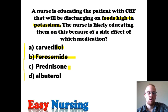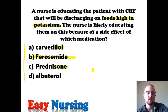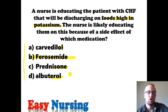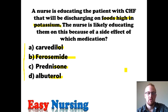Looking at the other options: prednisone is a steroid that helps the patient open up their lungs by decreasing inflammation. Albuterol, ending in '-terol,' is a beta agonist that acts as a bronchodilator to open up the lungs. Carvedilol just helps with blood pressure and helping the heart beat correctly. The only one that's going to lower potassium is furosemide — that is the correct answer.